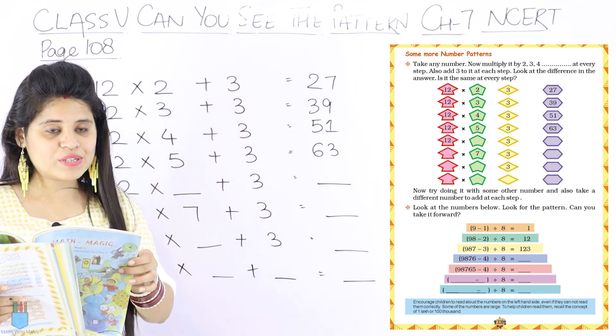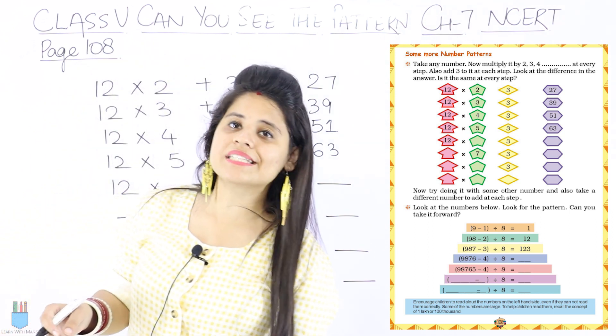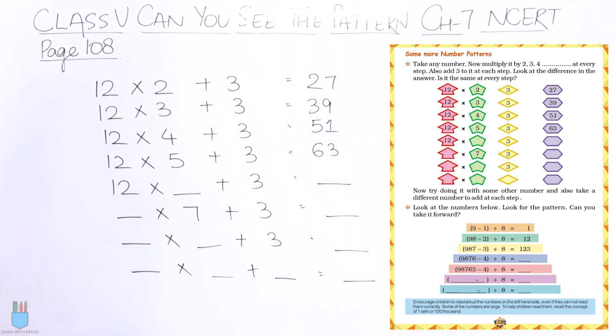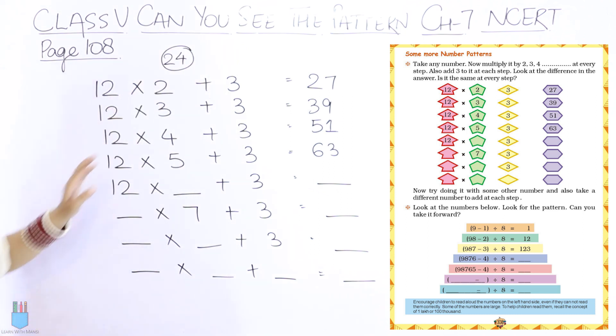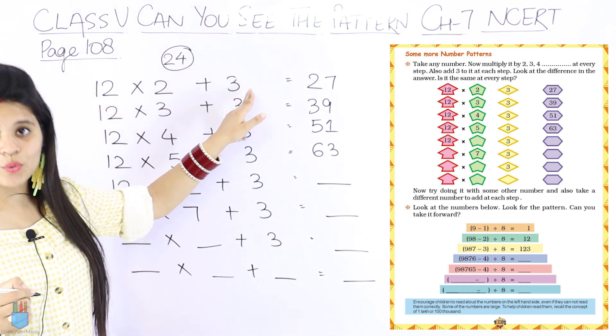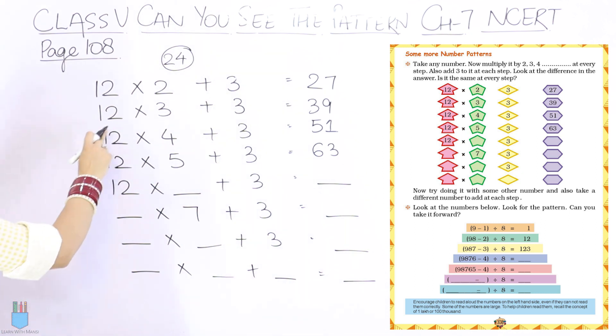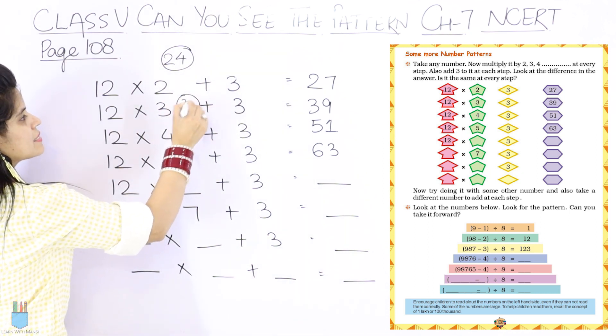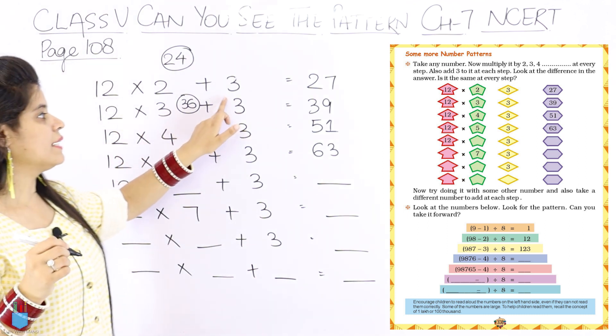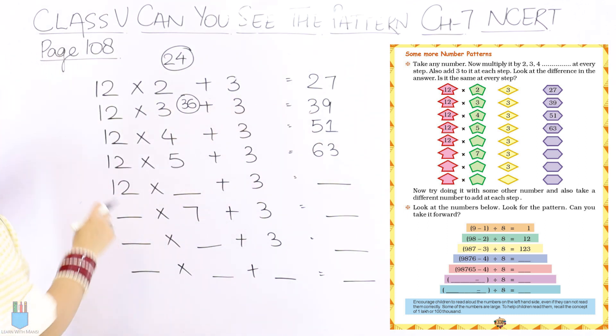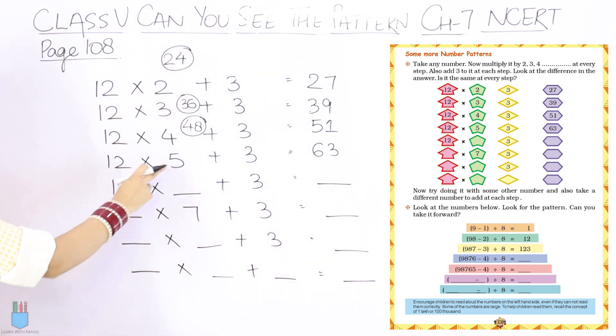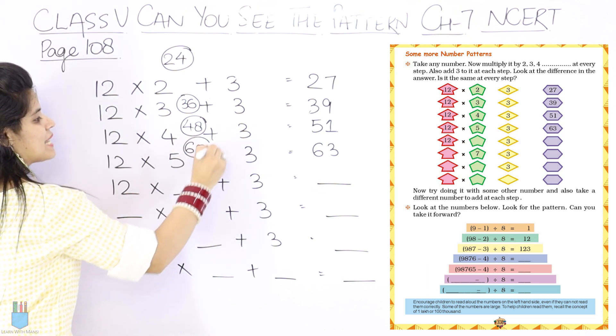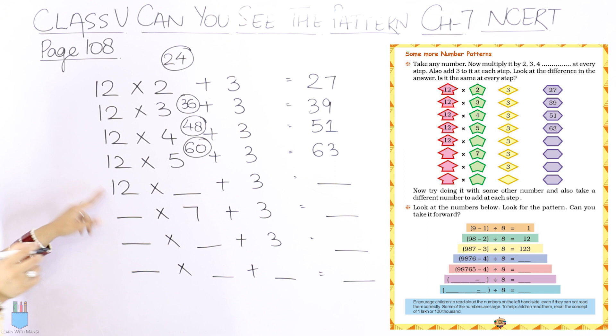Look at the difference in the answer. Is it the same at every step? So difference and answer we will see. Before we understand what it is, so 12 into 2 is 24. 24 plus 3 is 27. Similarly, 12 into 3 is 36 plus 3, which is 39. Then 12 into 4 is 48 plus 3, which is 51. Next, 12 into 5 is 60 plus 3, which is 63.